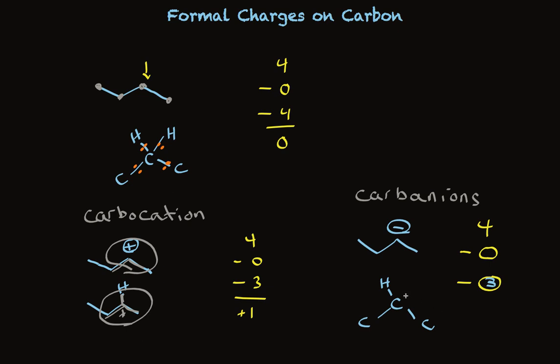To get to minus one, we need to have this number be a two. Which tells us that when we see a negative charge on carbon, we should expect to see an unshared pair. Four, minus two, minus three is minus one. So there's our negative charge.